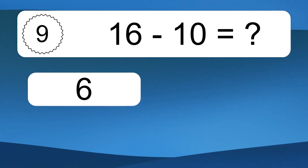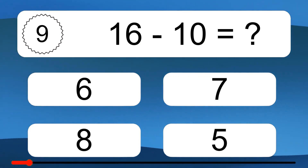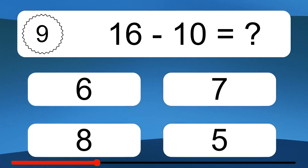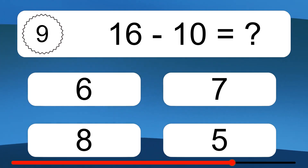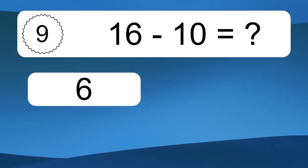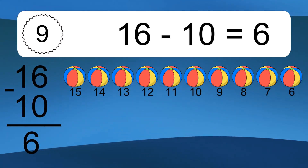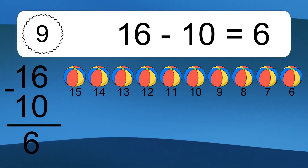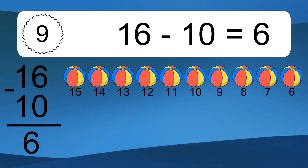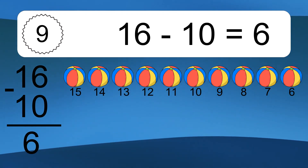16 minus 10 equals what? 16 minus 10 equals 6. Let's count it: 15, 14, 13, 12, 11, 10, 9, 8, 7, 6.